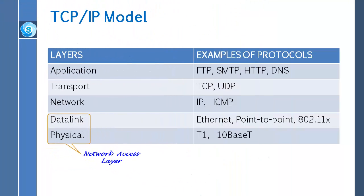Now let us describe the TCP/IP model. The TCP/IP model has five layers: application, transport, network, data link, and physical. The distinction between the data link and physical layer is not very clear, and often those two layers are called the network access layer. Commonly used application layer protocols are FTP for file transfer, SMTP for email, HTTP for web browsing, and DNS for finding domain names and their corresponding IP addresses — just like a telephone directory for the worldwide web. TCP and UDP are popular transport layer protocols, whereas IP and ICMP are designed for the network layer. The data link layer protocols include Ethernet (802.3) and point-to-point as well as 802.11 wireless LANs. T1 and 10BaseT are commonly used standards for the physical layer.